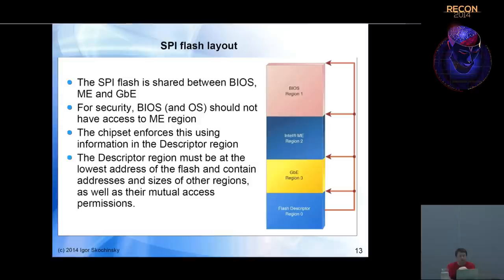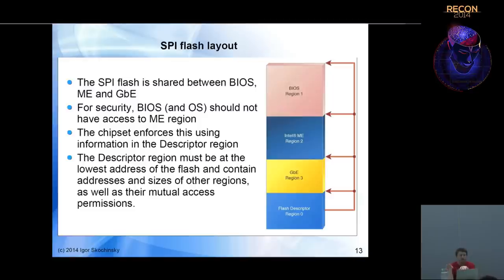After looking at all these sources and reversing many binaries, I learned the following: BIOS firmware and ME firmware are stored together on the same SPI flash chip, containing firmware for BIOS, ME, and Ethernet card. For security purposes, Intel uses a flash descriptor to limit which parts of the system have access to the various regions. The BIOS should not have access to the Intel ME region because it may contain sensitive information such as encryption keys.